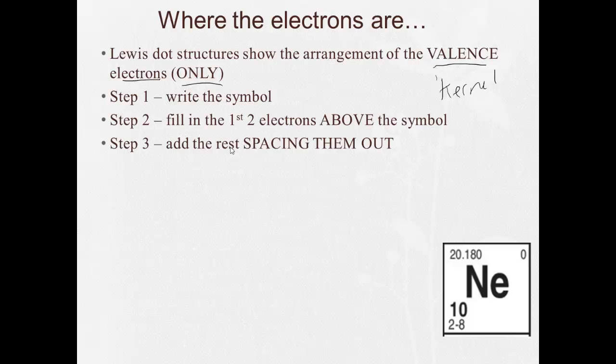So what we're going to do, neon. Step 1, write the symbol. I see neon has 8 valence electrons. So I need 8. The first two go above the symbol. 1, 2. Then I've got to space the rest out as best I can. 3, 4, 5, 6, 7, 8. So since neon is a noble gas and it has 8 valence electrons, it ends up with all 8 being full.